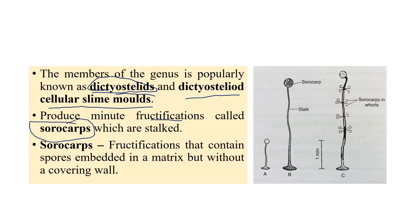Here they are generally called dictyostelites or dictyostelite cellular slime molds. They produce a fructification called a sorocarp — the same kind of sorocarp observed in Acrasiomycota. Looking at the image, we can observe a globose, ball-like structure forming above a stalk. In sporangia, we call that a sporangiopore, but here the stalk holds a globose or bulb-like structure called a sorocarp.